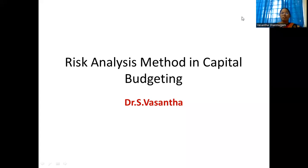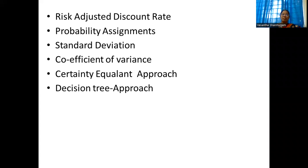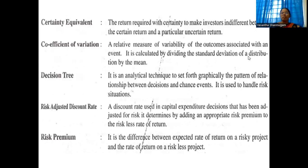Good morning students. Today our topic for discussion is risk analysis methods in capital budgeting. There are different methods used for analyzing the risk. We are going to see them one by one. The methods include: risk adjusted discount rate, probability assignments, standard deviation, coefficient of variation, certainty equivalent approach, and decision tree approach.